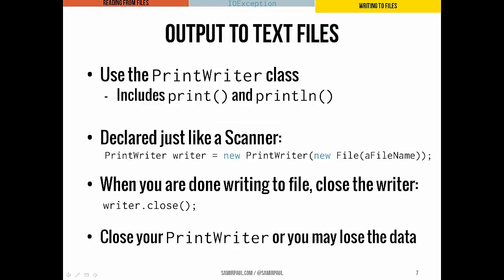If we want to write out to a file, we're going to use the PrintWriter class. It includes two methods that should look familiar: print and println. We've been using those to print to the console, but when we use them with the PrintWriter class, those methods are defined to write out to an actual file. Declaring a PrintWriter object looks a lot like declaring a Scanner: PrintWriter writer = new PrintWriter. We'll pass it a File object, and inside that File, we'll pass a file name. Importantly, when we're done writing to the file, we have to remember to close the file. If you don't close the file, you might lose all the data. And PrintWriters can also throw IOExceptions, so we have to include throws IOException with our main method.